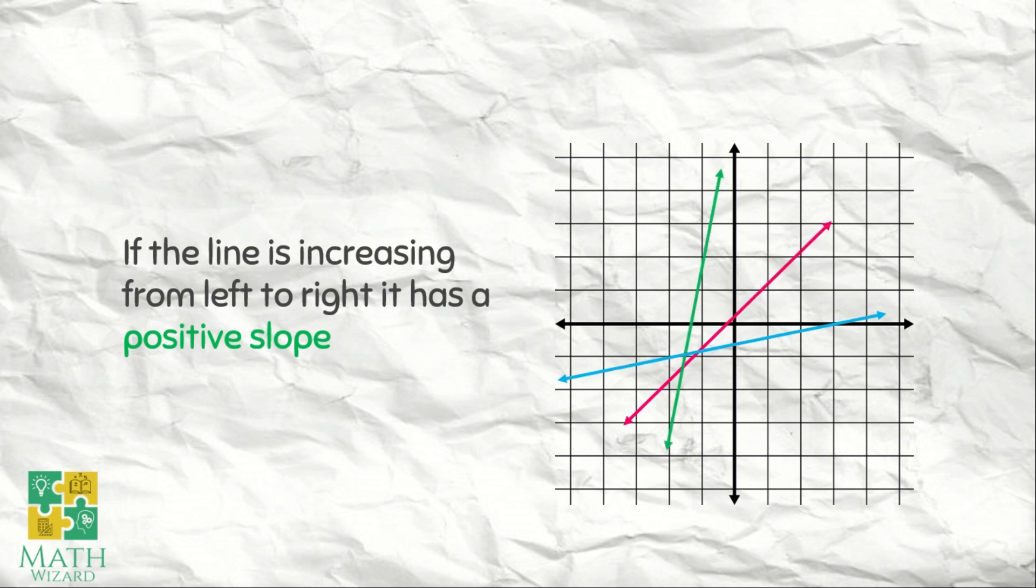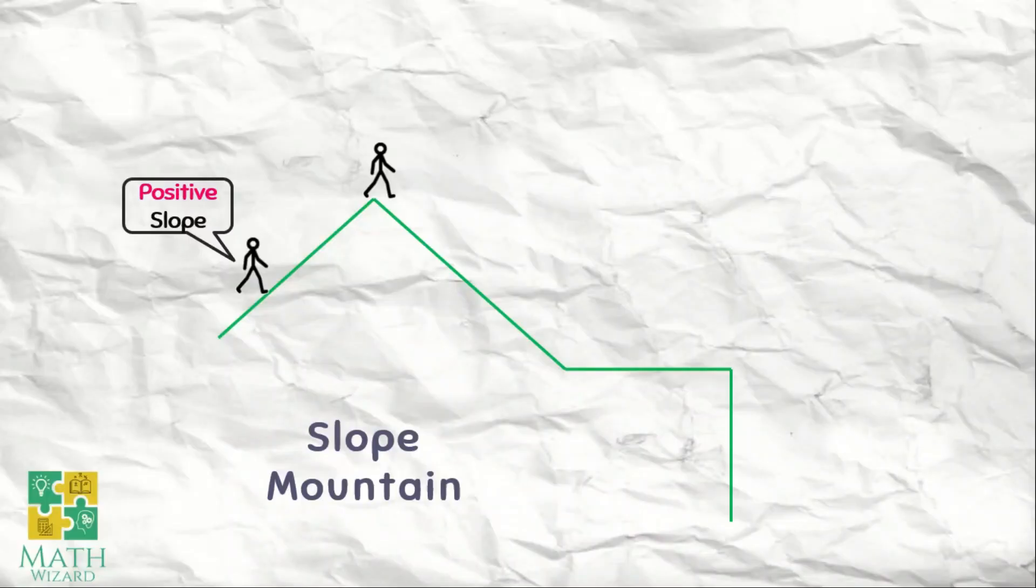Like for this example, the slope of this graph for the green one is positive, for the pink one positive, the blue one positive, because it is increasing from left to right.